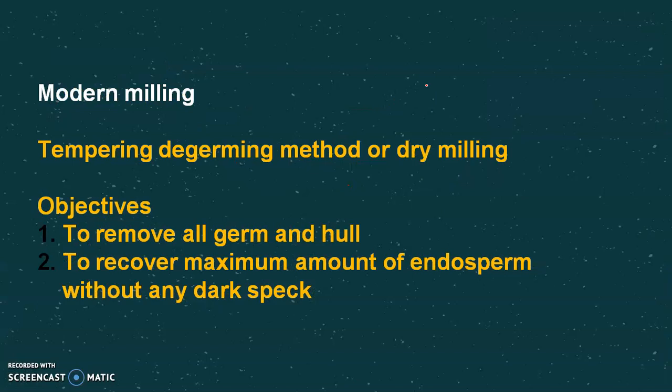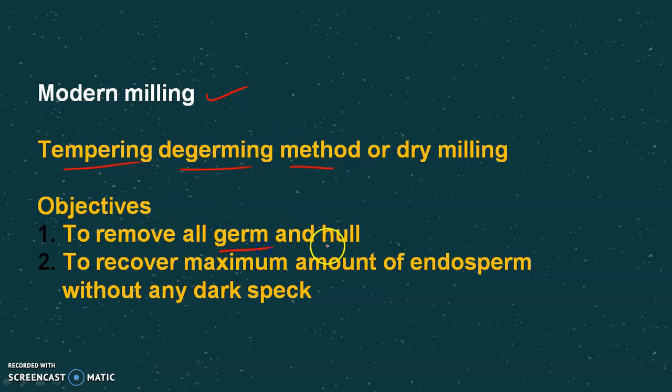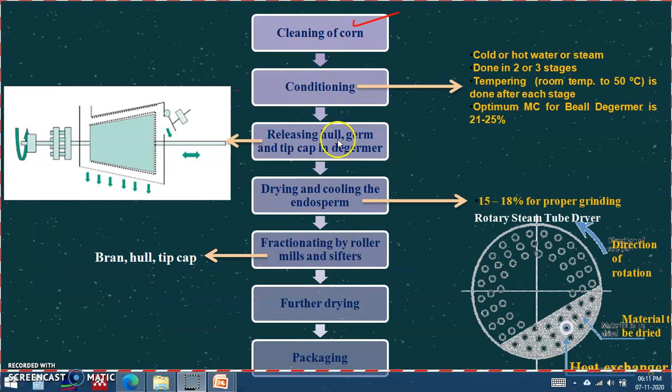The second dry milling type is modern milling, also known as the degerming method. The most commonly used modern dry milling process is the tempering-degerming method. It has two objectives: to remove all the germ, and to get the maximum amount of endosperm without any dark specs. These are the various unit operations of modern corn milling.